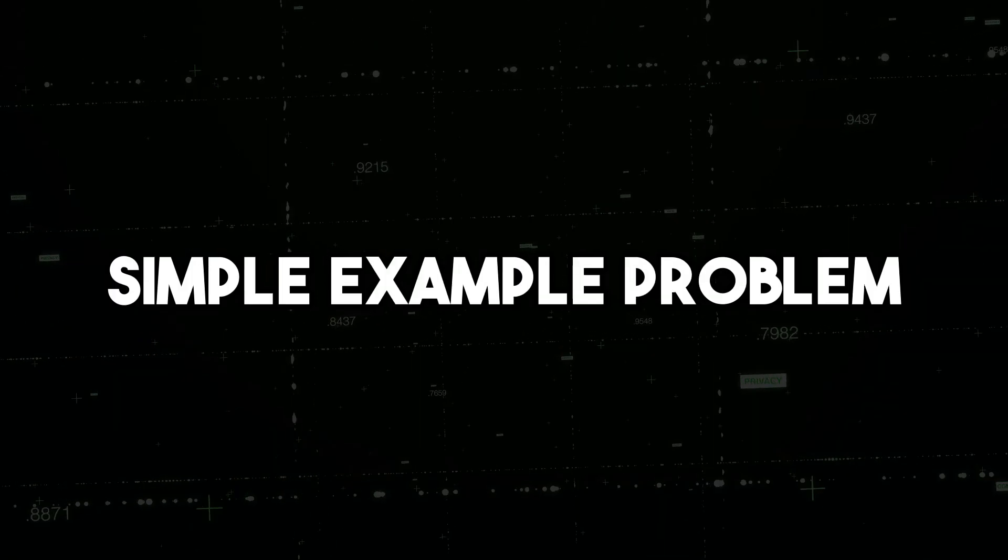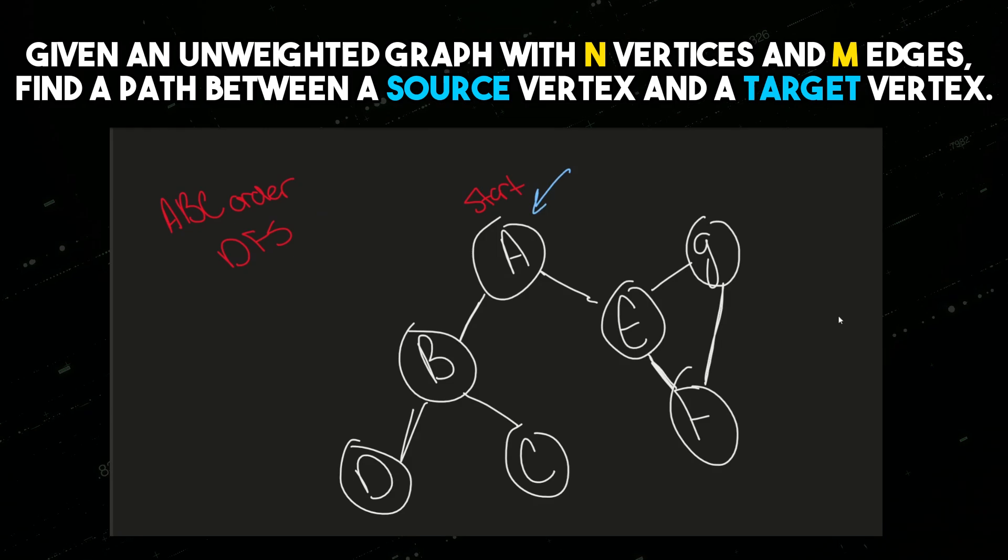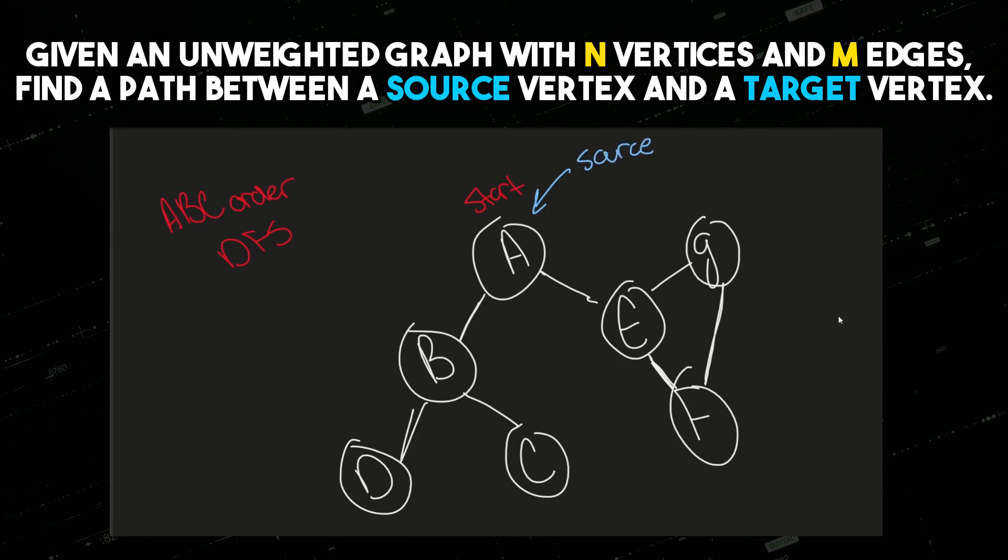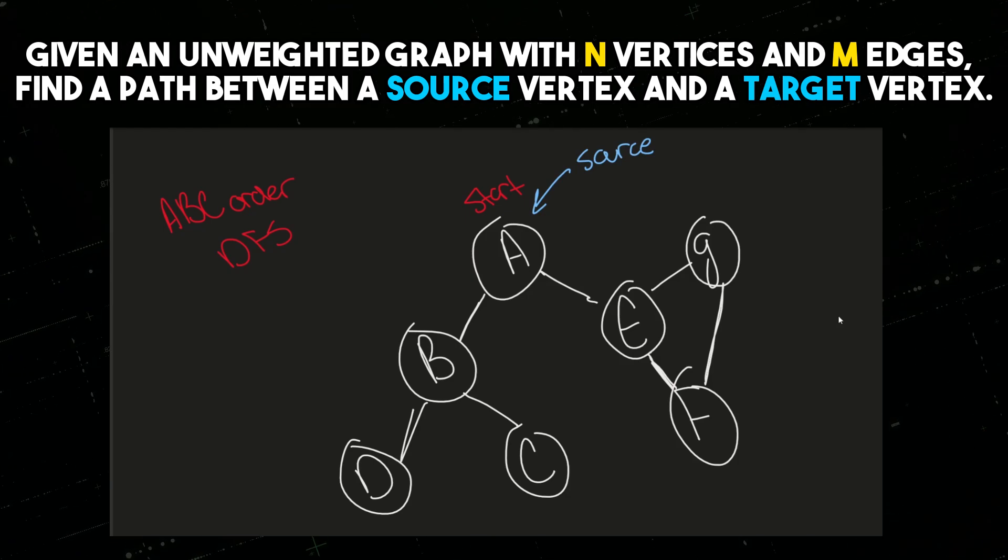Let's consider a simple example problem. Given an unweighted graph with N vertices and M edges, find a path between the source vertex and a target vertex.